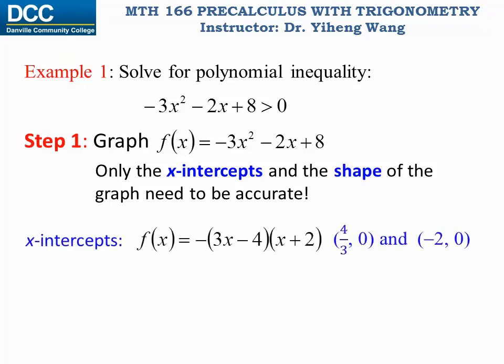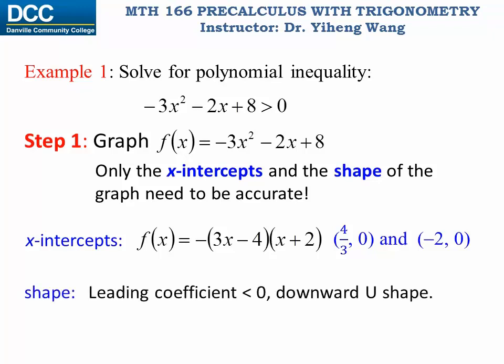First we need to find the x-intercepts by factorizing this quadratic function. You can use the quadratic formula as well. We determine the x-intercepts to be (4/3, 0) and (-2, 0). Because this is a quadratic function with leading coefficient -3, which is less than zero, the shape of the function is a downward U shape.